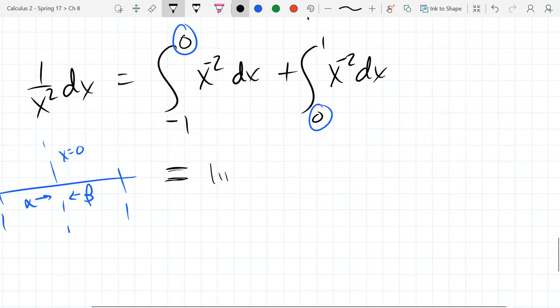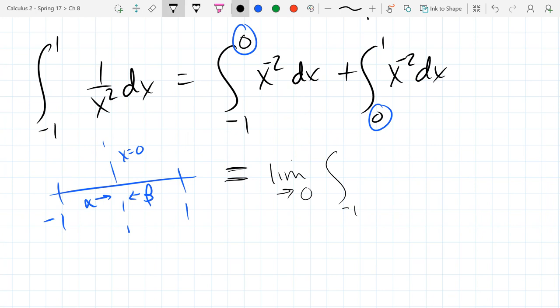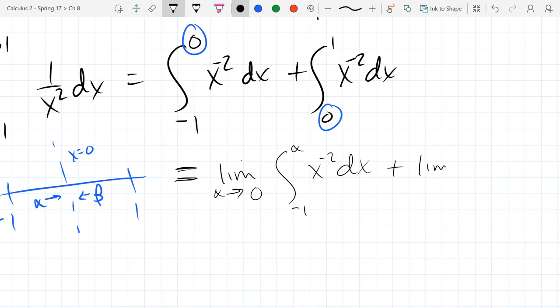I circled the end values that need to get turned into limits, so zero is bad. I'm going to take a limit, integral negative one to alpha, alpha approaches... we use alpha, not a. I'm just looking at that blue drawing right there. Alpha, x to the negative 2, dx, plus limit, we use beta here.